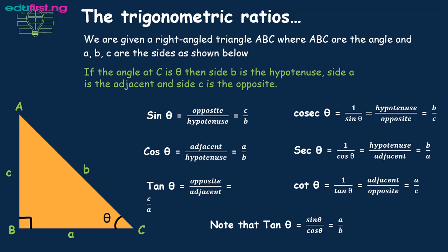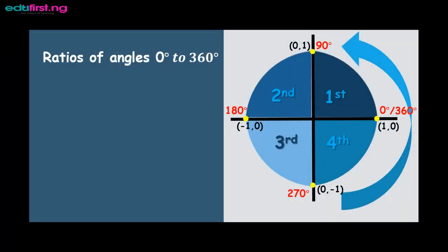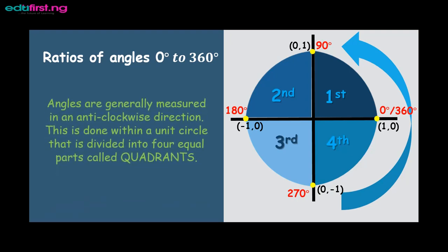Now let's look at the ratios of angles from 0 to 360 degrees. Angles are generally measured in an anti-clockwise direction, and this is done within a unit circle that is divided into four equal parts called quadrants. It is a unit circle because the distance from the center of the circle to the circumference is one unit.